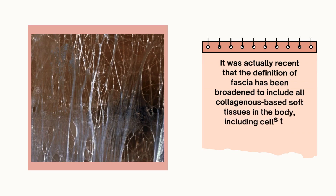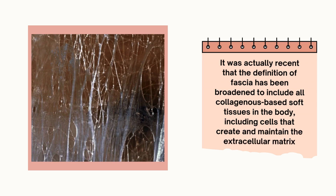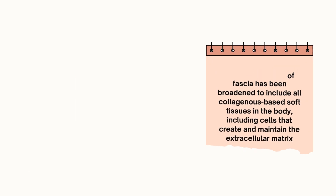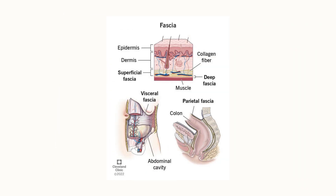So let's start off with a little bit of the classification system of fascia. As I mentioned earlier, fascia has multiple layers and it can be classified as superficial, deep, visceral, or parietal, and then further classified according to its anatomical location.